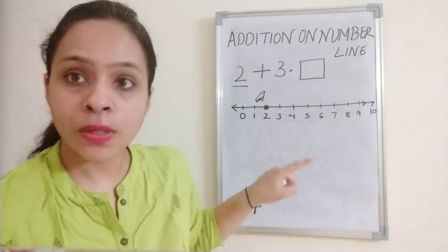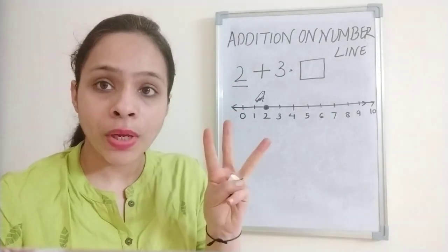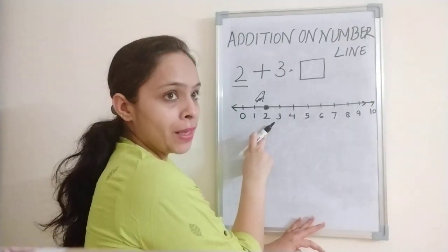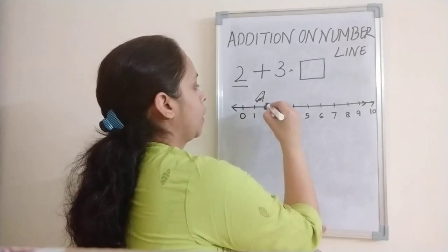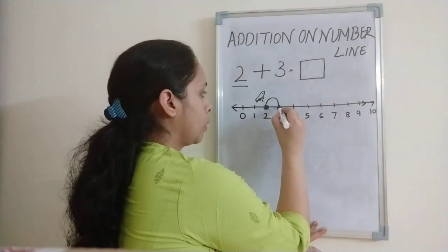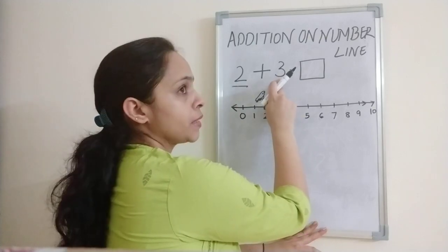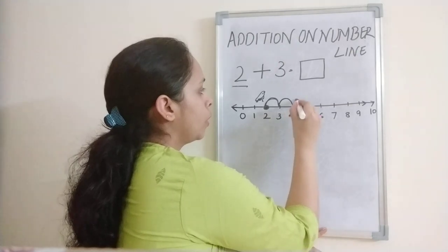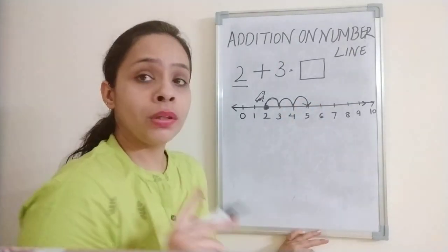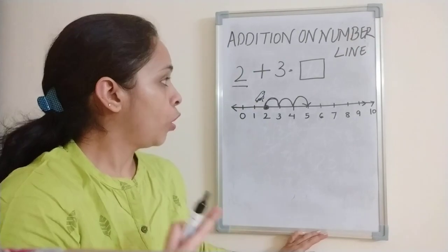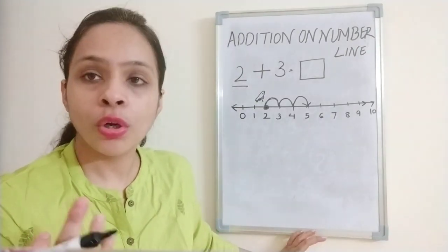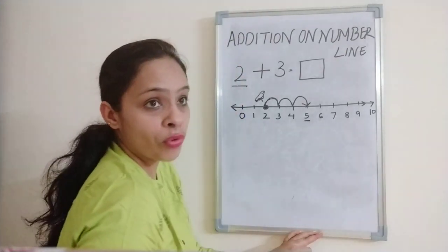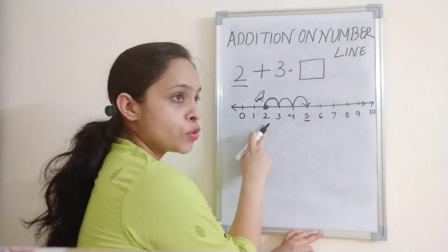How many steps does the frog need to jump? Three. The frog starts from two and takes three steps. One step taken. How many do we need? Three. One, two, three. So the frog took three steps and reached which number? You can see now the frog is on number five.